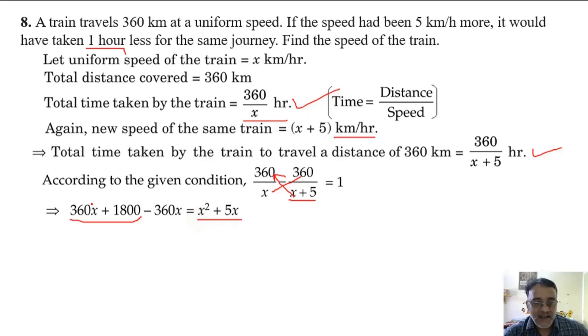360x cancels. Shift minus 1800 to the other side. We get equation x² + 5x - 1800 = 0.